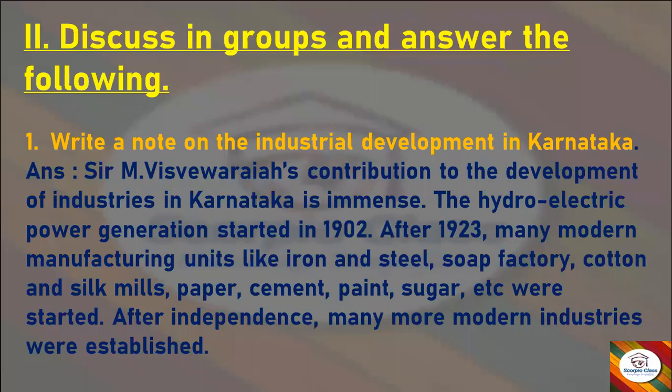Now let's move to the next section: Answer the Following. The first question is: Write a note on the industrial development in Karnataka. Answer: Sir M. Visvesvaraya's contribution to the development of industries in Karnataka is immense. Hydroelectric power generation started in 1902. After 1923, many modern manufacturing units like iron and steel, soap factory, cotton and silk mills, paper, cement, paint, sugar, etc., were started. After independence, many more modern industries were established.